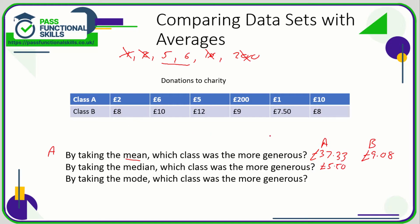Let's do the same for Class B. In order: seven fifty, eight, eight, nine, ten, twelve. Chopping off the outer values on each side, what's halfway between eight pounds and nine pounds is £8.50.